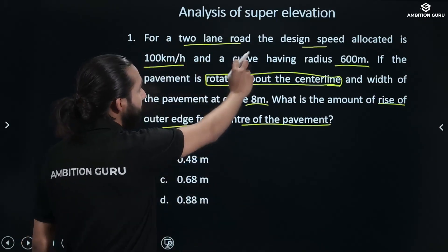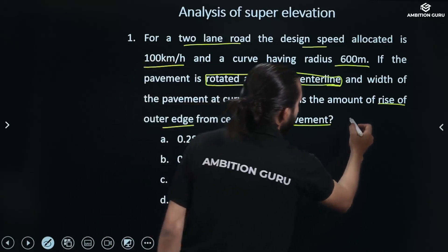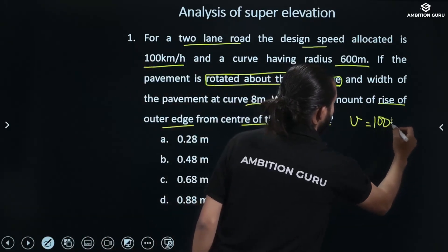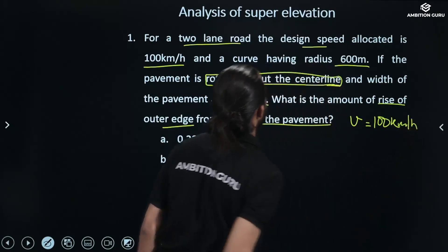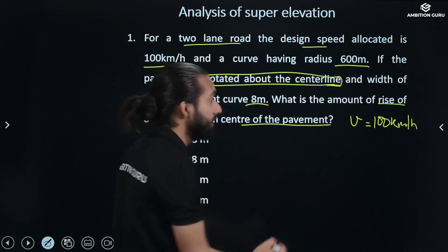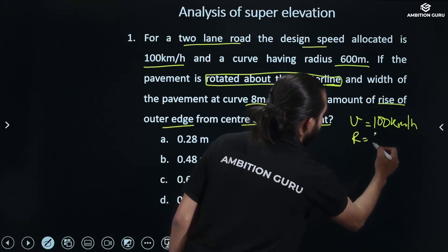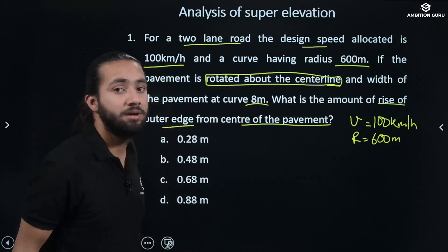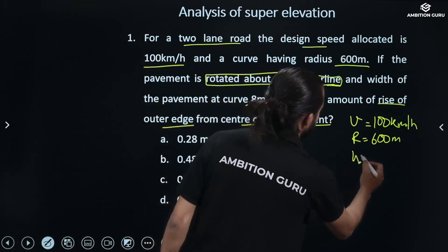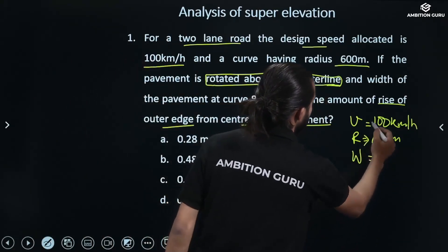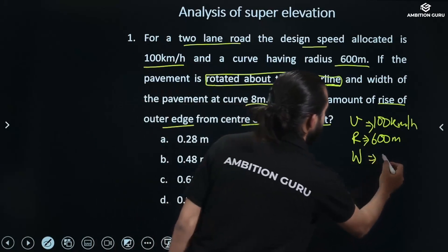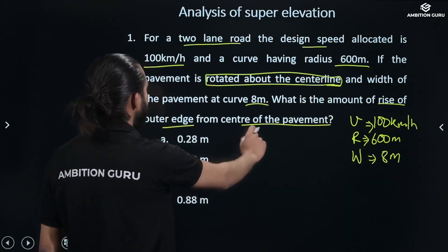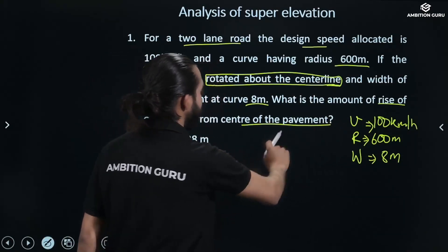The pavement parameters are: design speed 100 km/h, radius 600 meters, width of the curve 8 meters. What is the amount of rise of the outer edge from the center of the pavement?